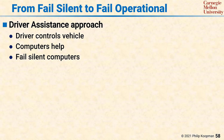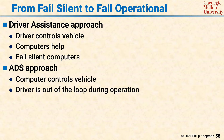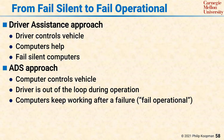When switching to a fully automated system, the computer controls the vehicle. There's no driver continuously in the loop overseeing vehicle operation. That means that a computer failure has to result in a system that can still maintain control — in other words, fail operational.